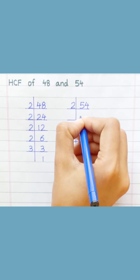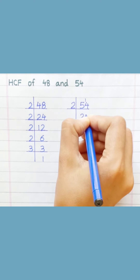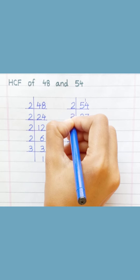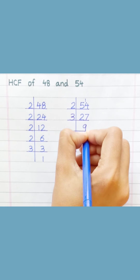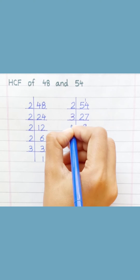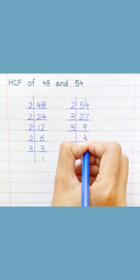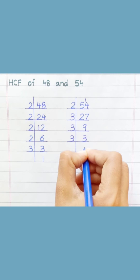Two twos are 4. Two sevens are 14, three nines are 27. Three threes are 9. Three ones are 3.